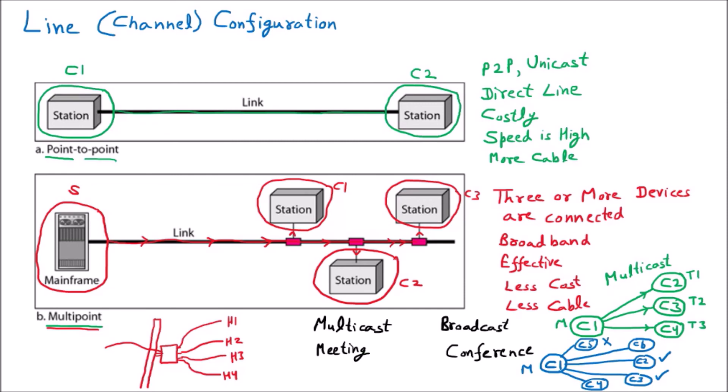The manager sends data to all, but C2 and C3 will receive it and others will discard it — that is broadcast. Broadcast means sending to all, and if the message is for specific people, they will understand it and others will discard it. For example, in a class of 60 if I say 'Amit, you have to do this assignment tomorrow,' everybody hears it but only Amit acts on it.